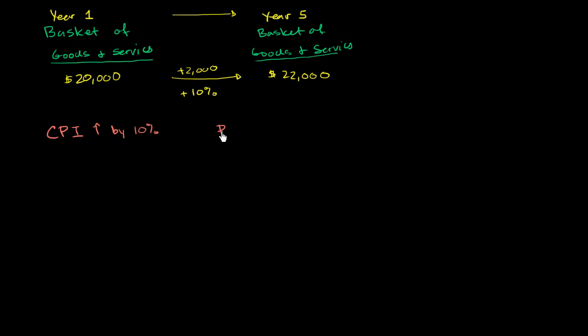...inflation has been 10% between year one and year five. Or in general, everything got 10% more expensive. Or you would need 10% more money to have the same standard of living. And in general, when people are just referring to inflation, especially in modern times, they are referring to price inflation, this general increase in the price of goods and services measured by some type of basket of goods.